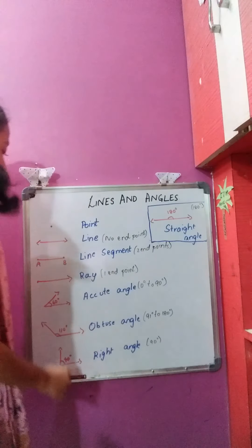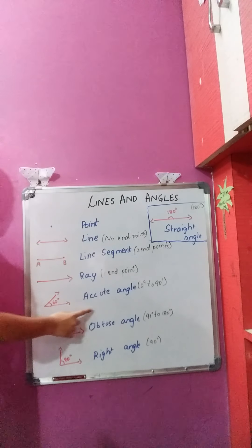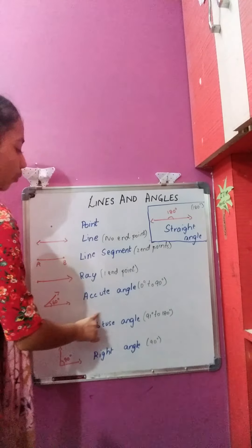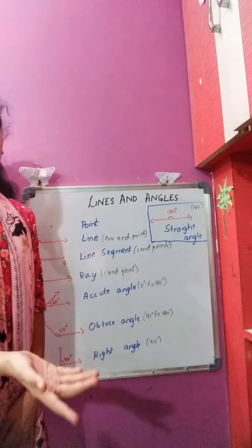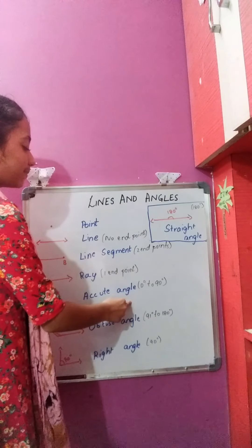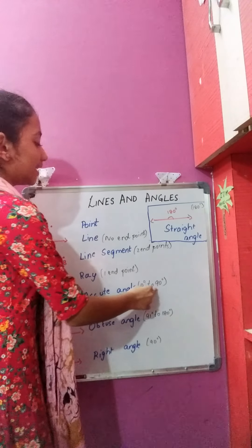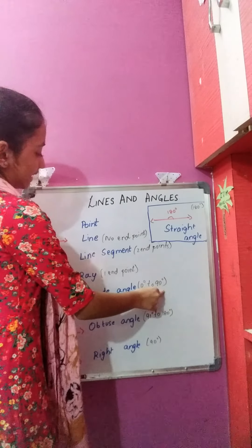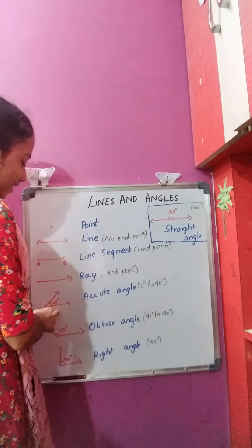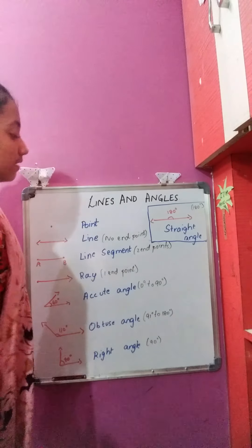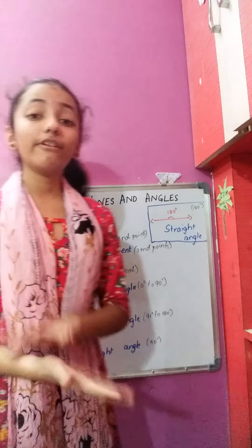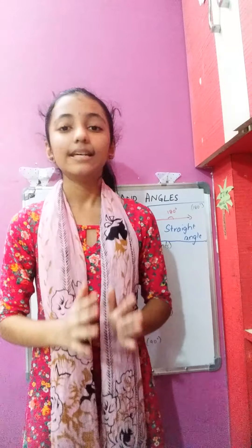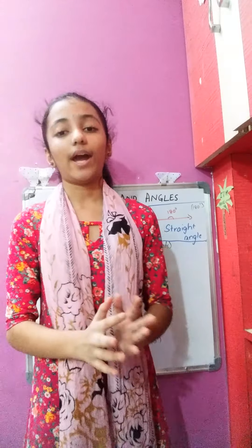Now, acute angle. What is an acute angle? An angle which measures 0 to 90 degrees is an acute angle. Always remember that 0 to 90 degrees, but not 90 degrees itself, is an acute angle.